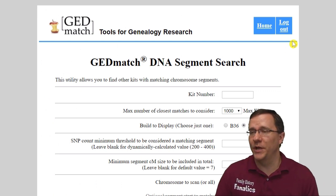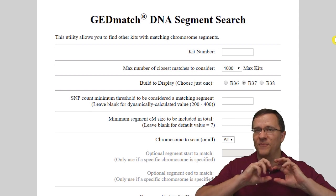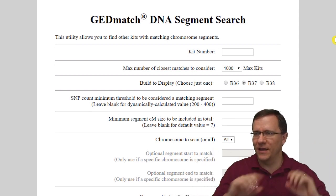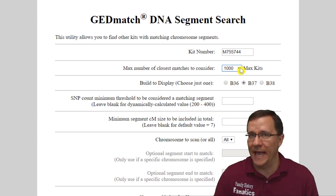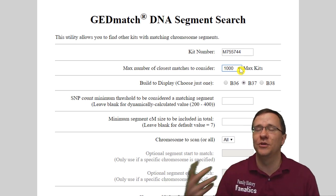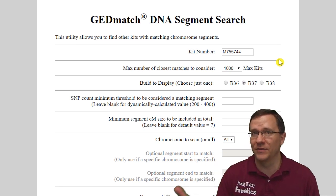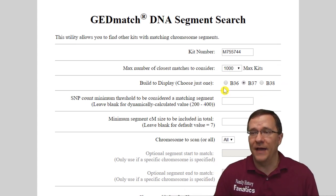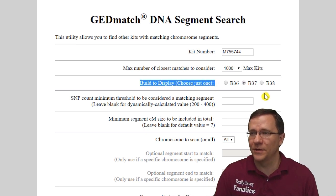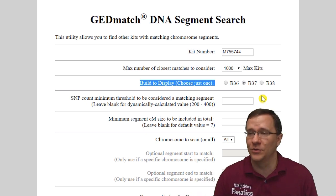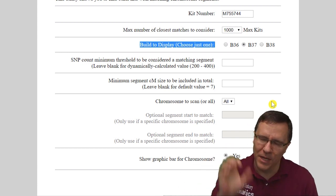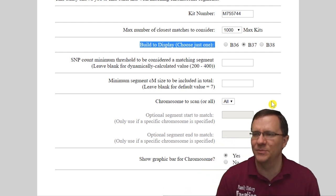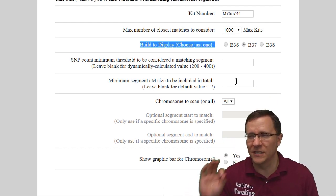On the segment search screen, we need to enter a kit number — this is the kit it's finding all the matches for. I'm going to use just one of my kits. It's going to ask for the maximum number of matches: it defaults to 1,000 closest matches, but you can go up to 10,000. I'll leave it at 1,000. You have the build to display, which defaults at B37, but you can show B36 or B38. You can also change thresholds like minimum SNPs or minimum segment size — I usually just leave those at the defaults.